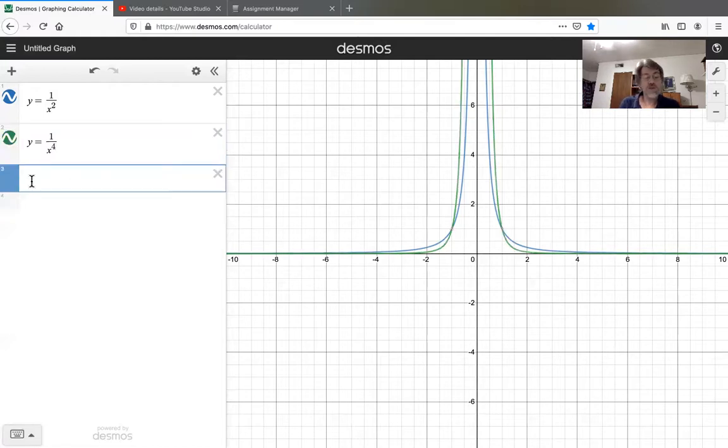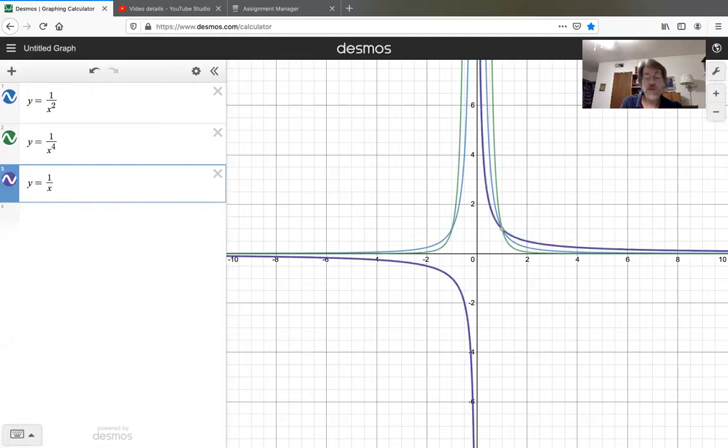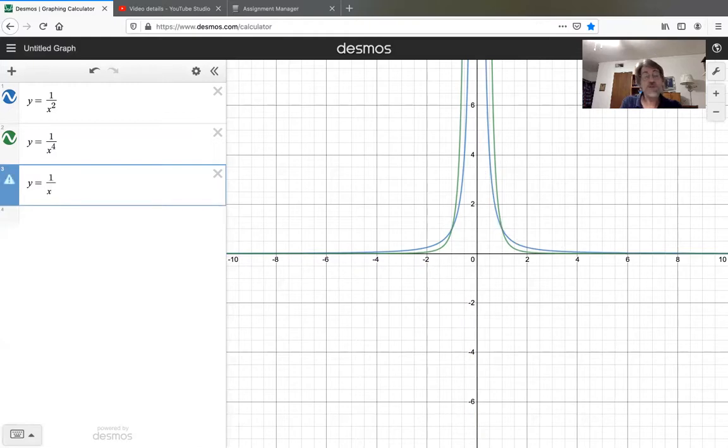Maybe one more of these just to sort of get the hang of it. y equal 1 over x raised to the sixth maybe. And that one is in the purple. Notice that again it gets more close to the x-axis and seems to take off more quickly. So it gets closer. Another way to say that is it gets closer to the vertical asymptote more slowly because it's rising faster.